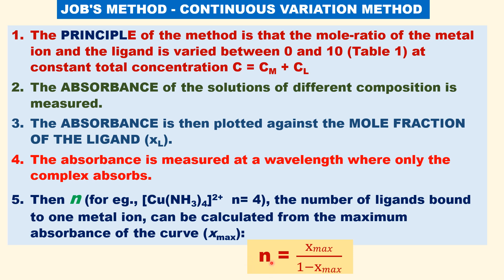n equals X-max divided by (1 minus X-max), where X-max is the mole fraction of the ligand at which the absorption maximum is obtained. We will see in the table and examples so that you can clearly understand.